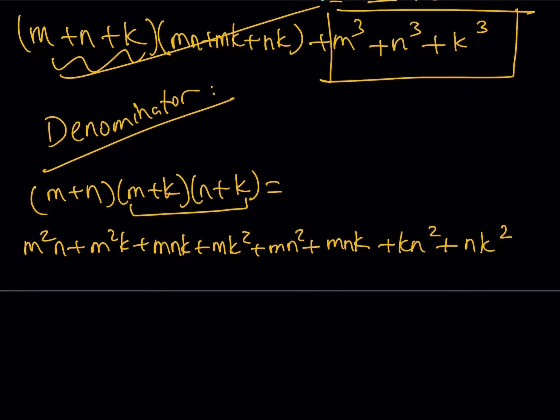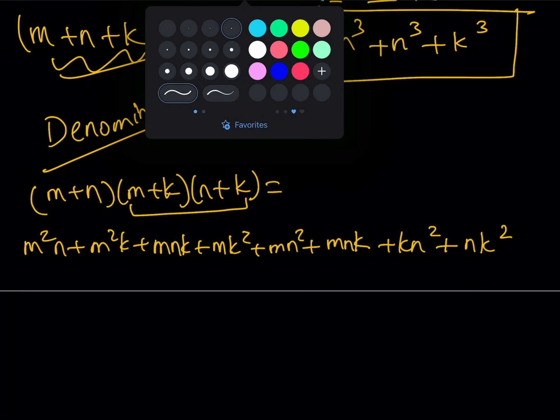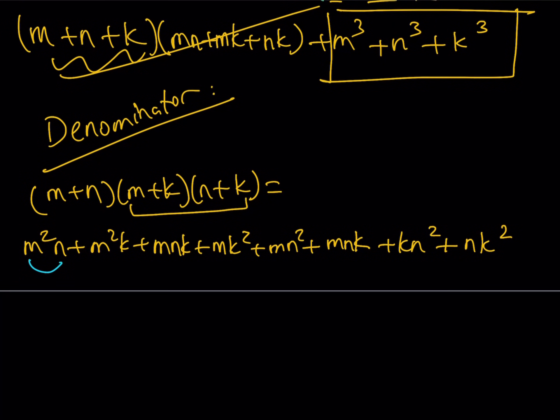So what you can do is you can distribute these two first and then distribute M plus N. Now, we're going to factor the denominator in a special way. So this is what I'd like to do. Bring some of these terms together. For example, I'd like to pick M squared N, MN squared with an MNK. So if I take out MN as a common factor here, I'll be getting M plus N plus K. That's cool. Now, I'll do something similar for M squared K and MK squared and MNK. So that's going to look like MK times the quantity M plus K plus N. So pretty much they are the same thing.